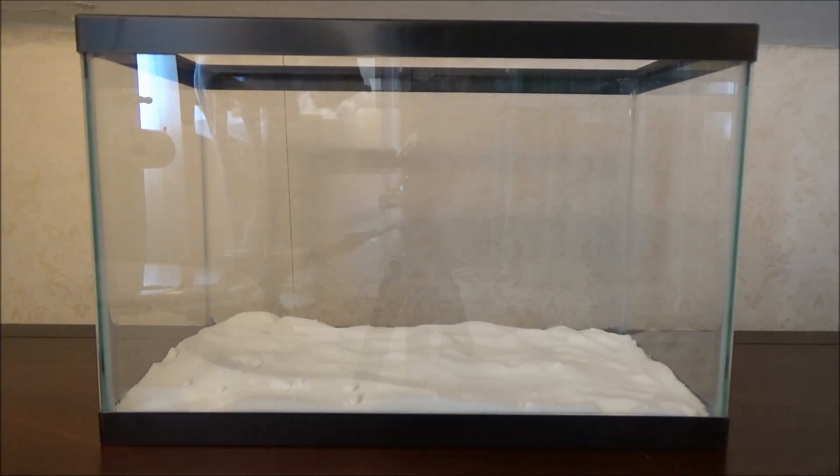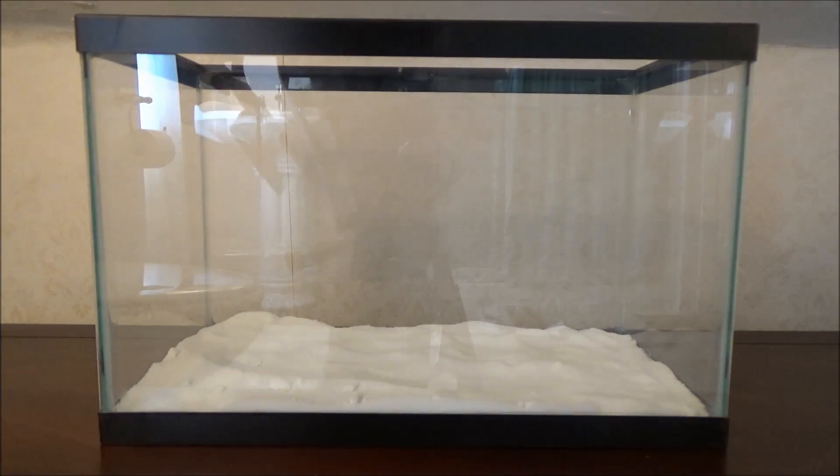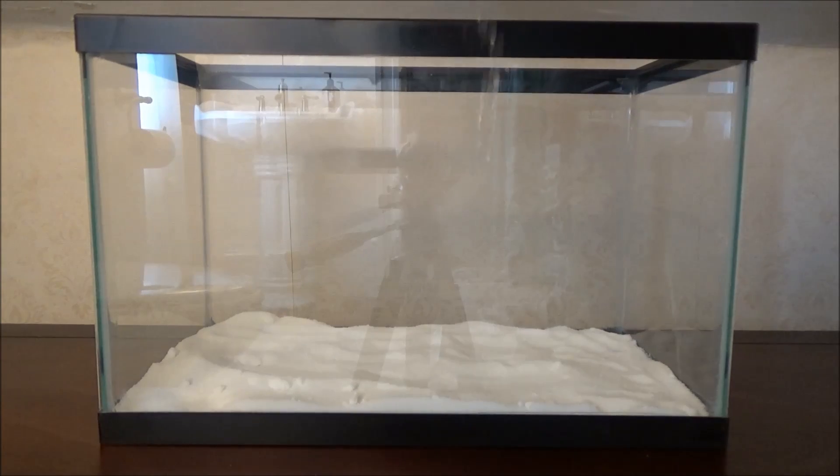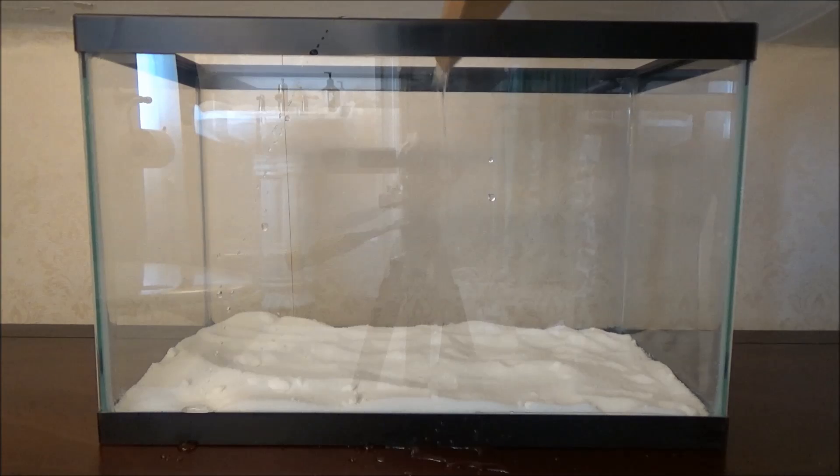You're going to want to use maybe a folded piece of cardboard or something like that because you want to get the water to hit the side of the tank so that it gently flows in and doesn't disturb the sugar too much. You guys will see I have my container of water and then I'm just using a folded piece of cardboard to get the water to hit the walls of the tank.